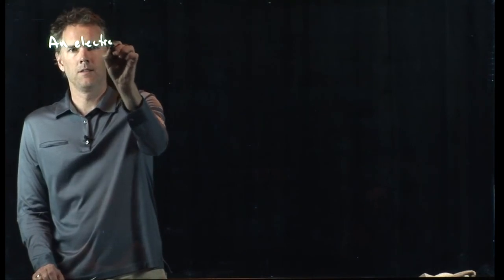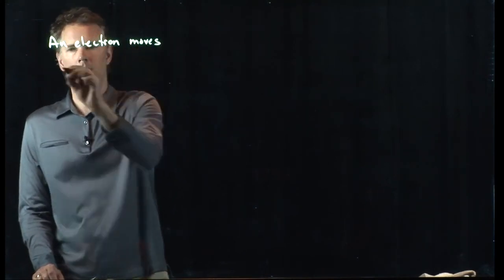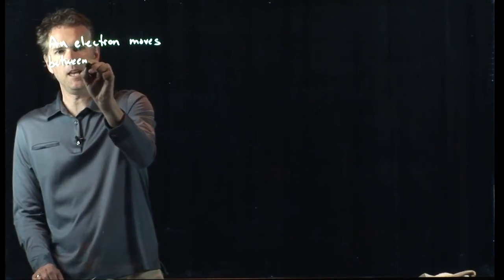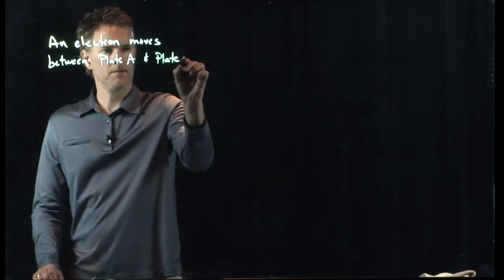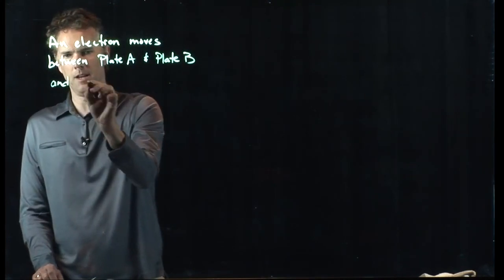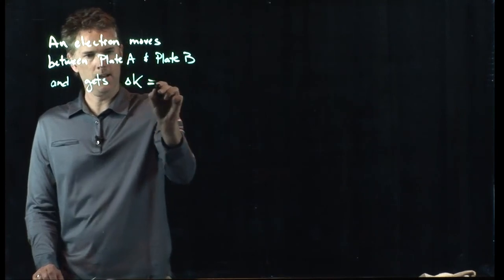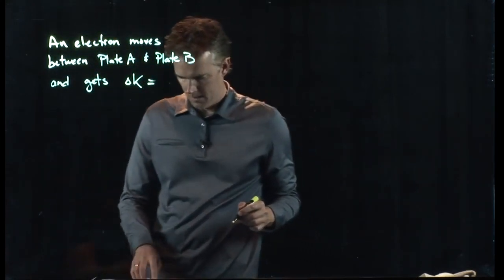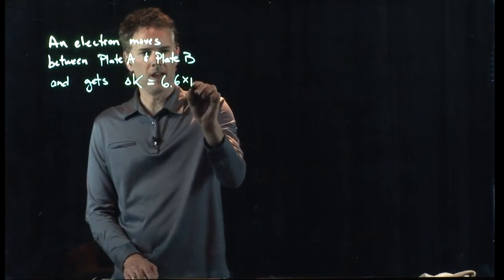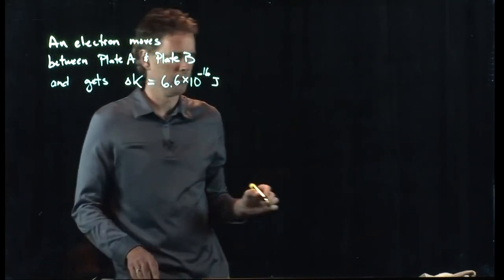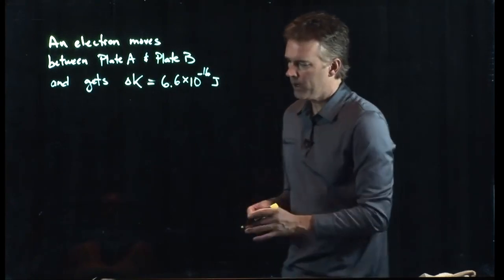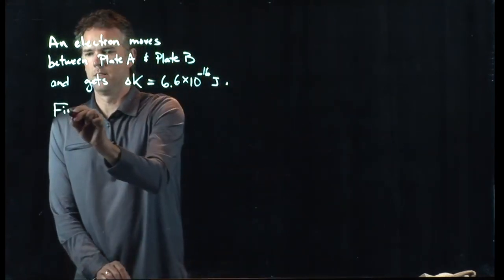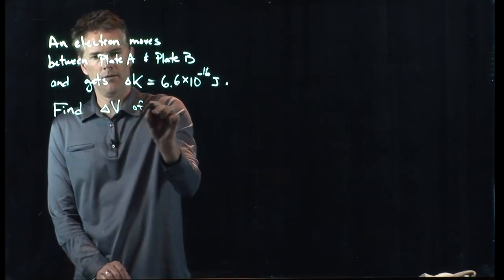The problem says an electron moves between plate A and B, and it gets energy when it does that. It gets kinetic energy delta K of 6.6 times 10 to the minus 16 joules. This is how much energy the electron acquires when it moves between those two plates, and we need to find delta V of the plates.